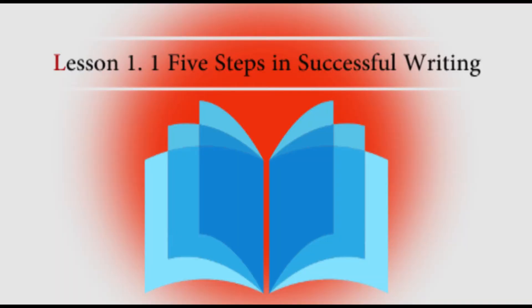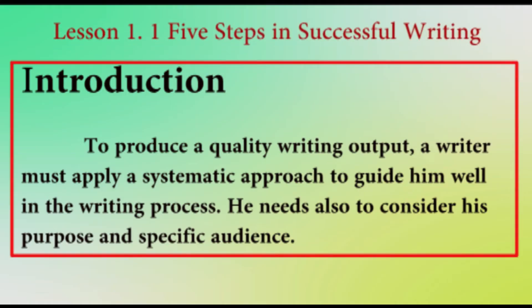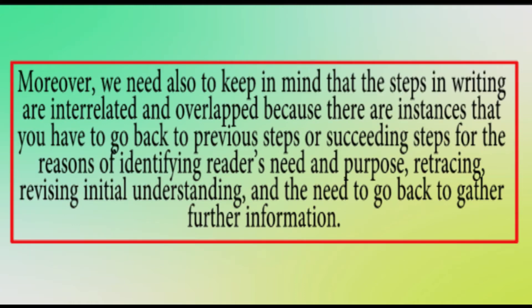Lesson 1.1: 5 Steps in Successful Writing. Introduction: To produce a quality writing output, a writer must apply a systematic approach to guide him well in the writing process. He needs also to consider his purpose and specific audience. We need to keep in mind that the steps in writing are interrelated and overlap because there are instances that you have to go back to previous steps or succeeding steps for the reasons of identifying the reader's need and purpose, retracing, revising initial understanding, and the need to go back to gather further information.